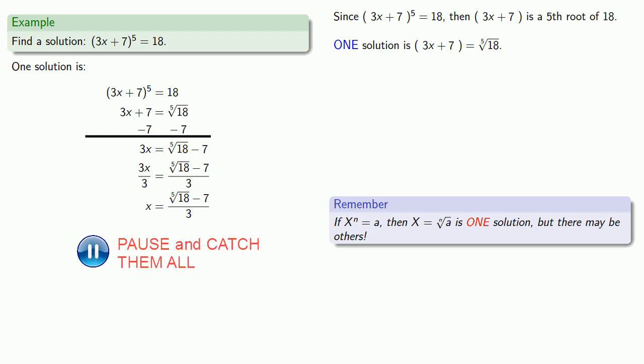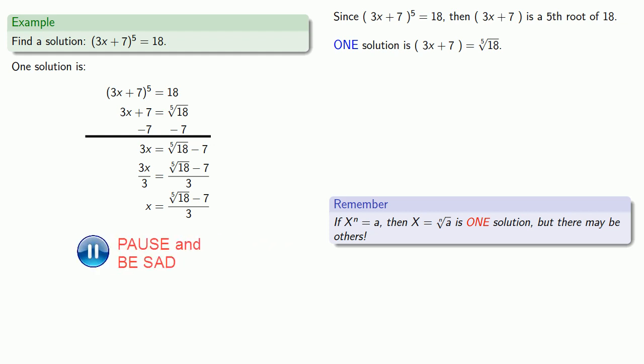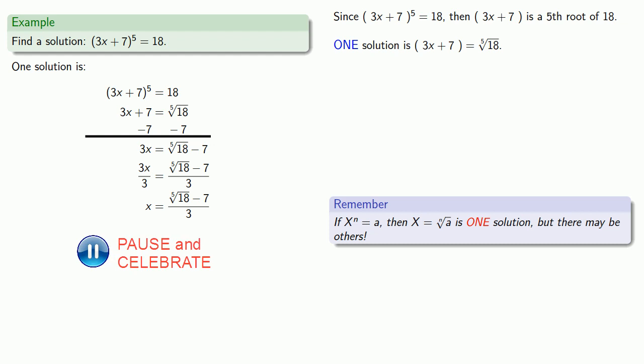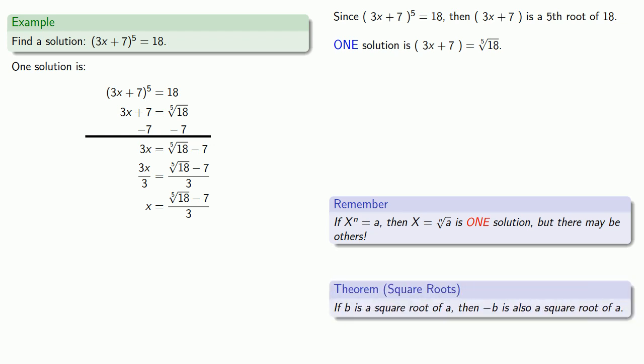We're not yet in a position to find all solutions to this particular equation, but if you continue taking mathematics courses, a later course will show you how to solve this type of equation completely. At this point, the only type of root for which we know all values is the square root: if b is a square root of a, then negative b is also a square root of a.